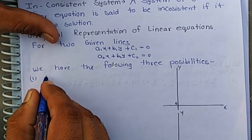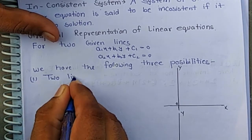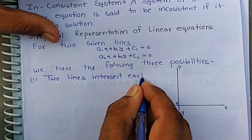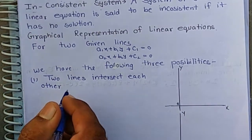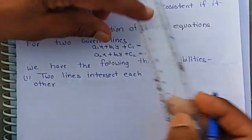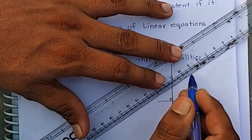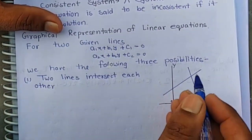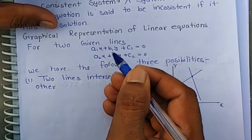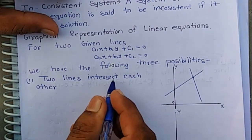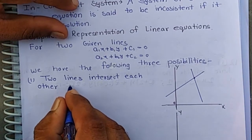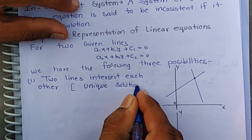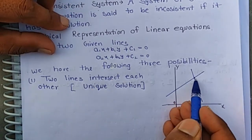First, the two lines intersect each other. Suppose this is the first line and this is the second line, and these two lines intersect each other at a point. When two lines intersect each other, then we get a unique solution of the given equations.